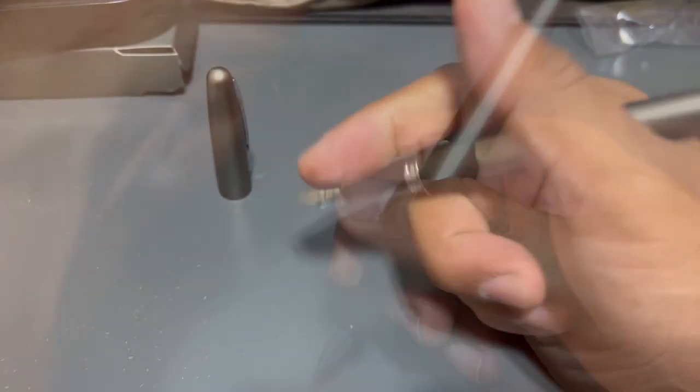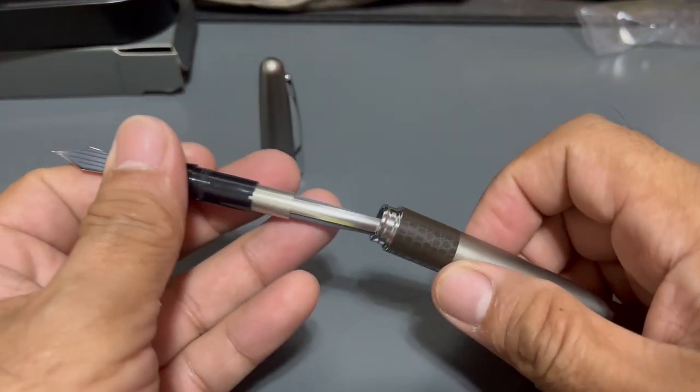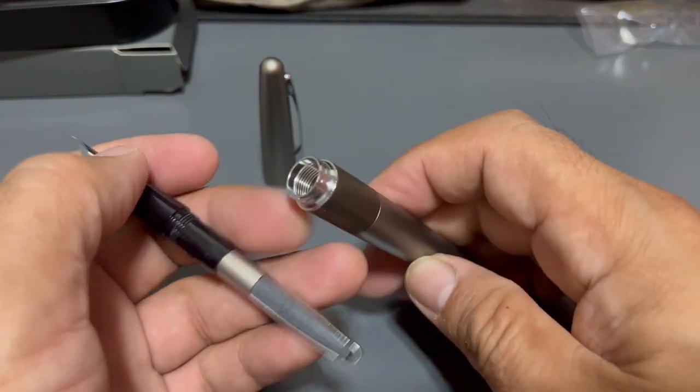It has a chrome band running around right between the nib section and the barrel of the pen and a black nib section of the pen.